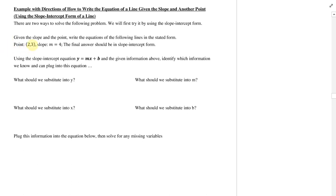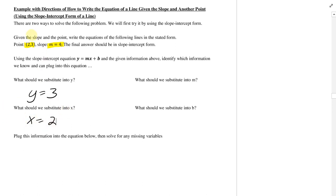So first method here: I have a slope and a point. My point is (2, 3) and my slope is 4. I want my final answer in slope-intercept form. We're going to use the y equals mx plus b equation. I want to plug in all the information I have. I would plug in y equals 3 from the coordinate, x equals 2 from the point, and m equals 4. For b, we're going to plug in nothing — we solve for it.